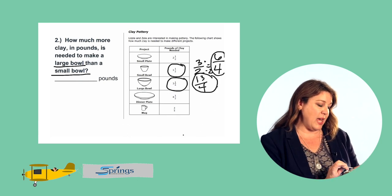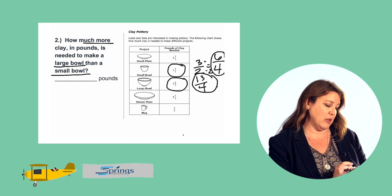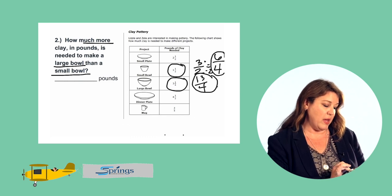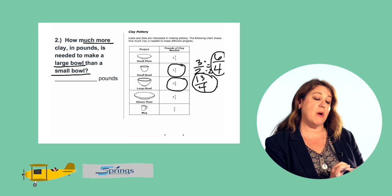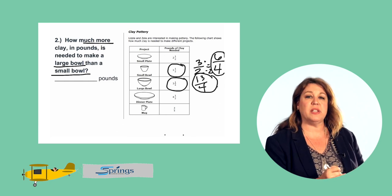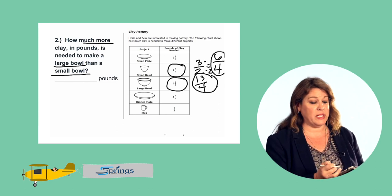So the question is how much more clay in pounds is needed to make a large bowl than a small bowl. And so when it's asking us how much more we know that we're comparing these two numbers and we need to find the difference. So that means we need to subtract.